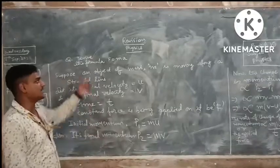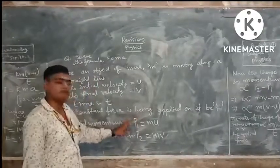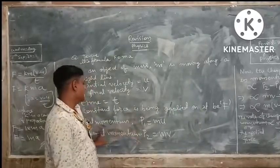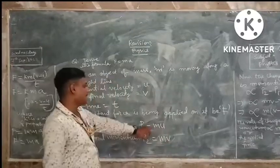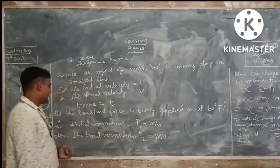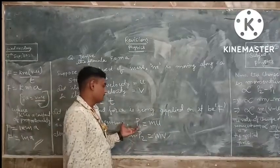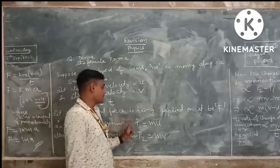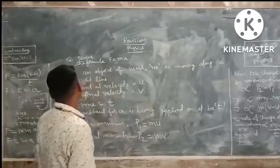So the momentum of the moving body: p1 — here p denotes momentum. So initial momentum p1 equals mass into velocity, where m is the mass and u is the velocity. Therefore, its final momentum p2 similarly equals mass into velocity, so p2 equals mv.